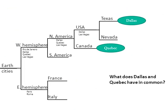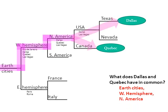Here's a quick question: what does Dallas and Quebec have in common? Starting at the far left and tracing the path that Dallas and Quebec follow before they split — Dallas and Quebec are Earth cities, they're in the Western Hemisphere, and they're both in North America. But that's the three things they have in common. Once you get to North America, they split: Quebec is on the Canada branch and Dallas is on the USA branch.